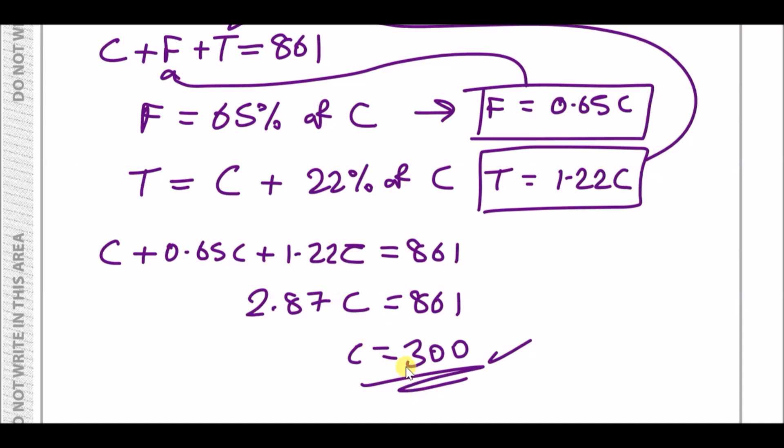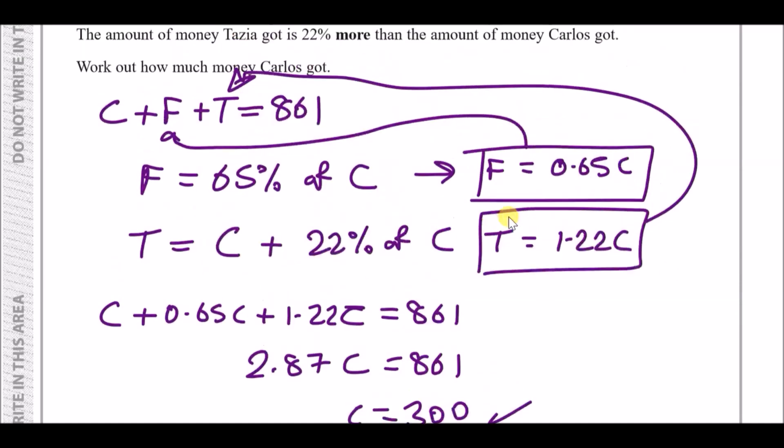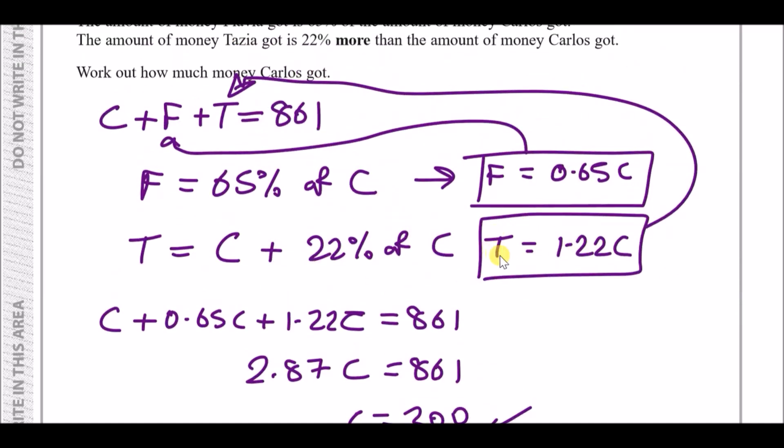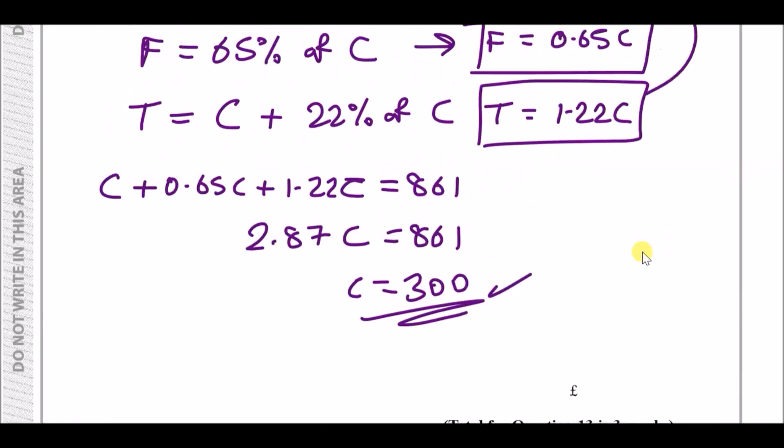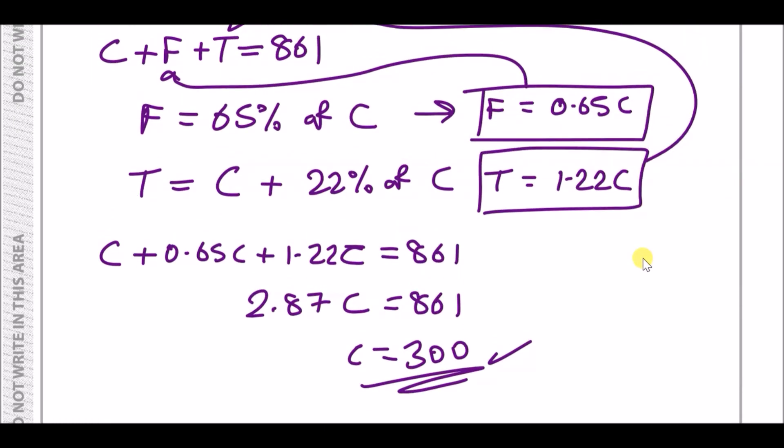Now that you know Carlos's amount is 300 pounds, you can also find Flavia's and Tazia's amounts by substituting back, though the question only asks for Carlos's share.